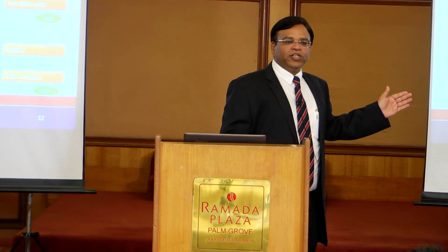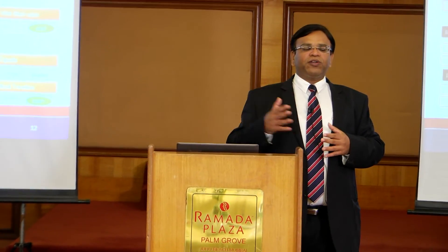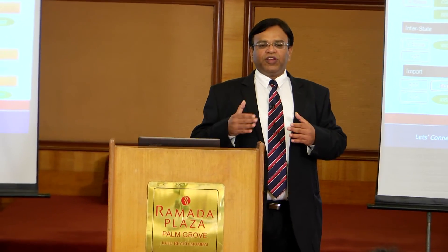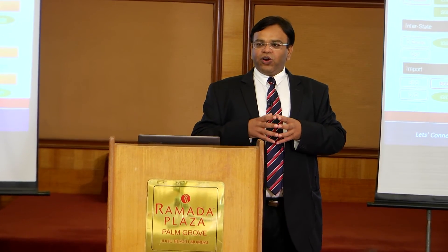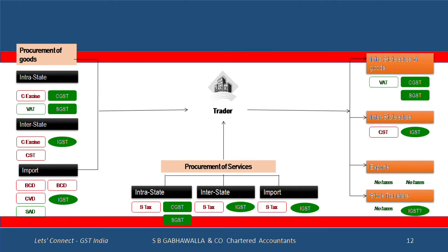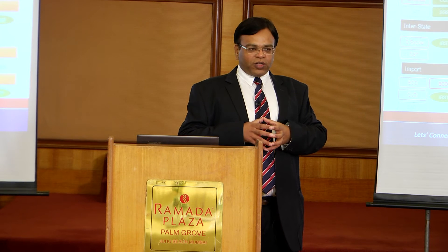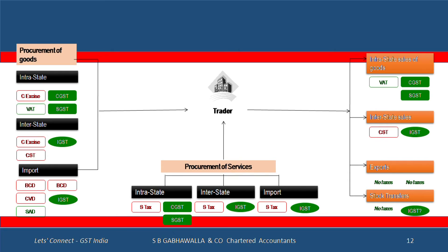On imports, CVD is a cost and SAD refunds are available but it's a long process — you have to file your bill of entry, submit documents to customs authorities, and it's at least a yearly process to get back the SAD refund certification, with associated costs. All of that goes away; instead you straight away have IGST which you claim in your return and adjust against output taxes. On services, service tax today is a cost because input service is defined narrowly for trading activity — credits are not available.